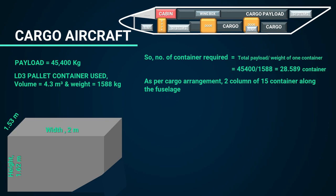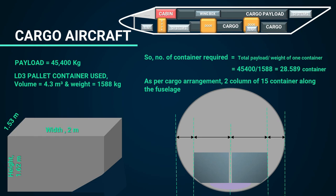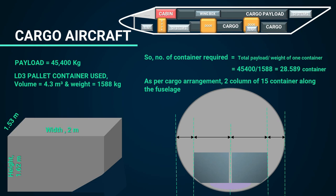As per the cargo arrangements, 2 columns of 15 containers are arranged along the fuselage. The fuselage width is twice the width of the LD3 plus twice the side clearance. The clearance value is usually 0.7 to 1 meter — here we consider 0.7 meters each side. So the calculation is 2 × 2 m + 1.4 m clearance = 5.4 meters fuselage width.